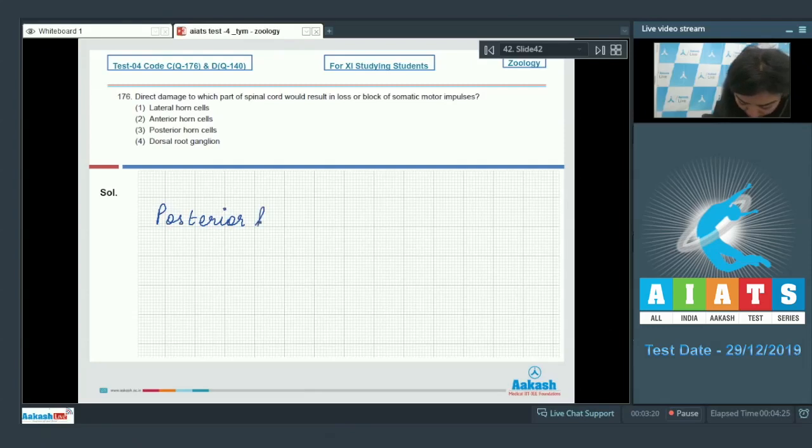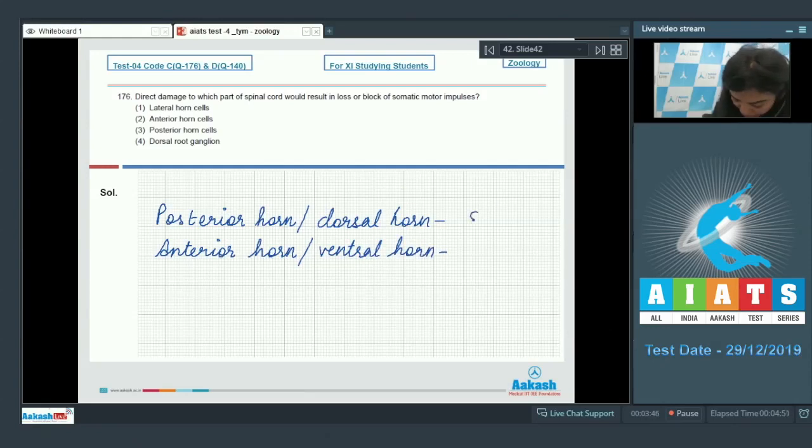The posterior horn is also called the dorsal horn, whereas the anterior horn is also known as the ventral horn. The posterior horn is sensory in function, whereas the anterior horn is motor in nature.